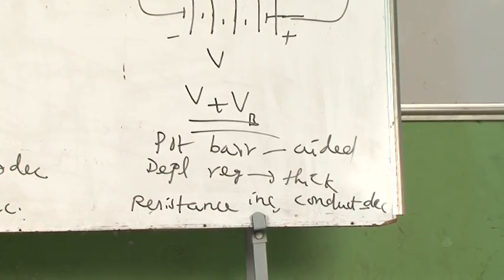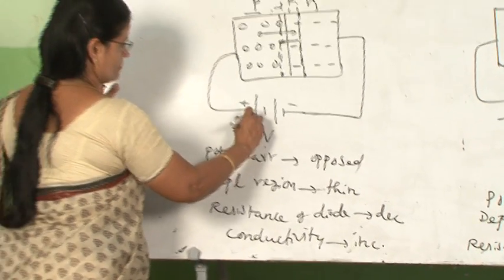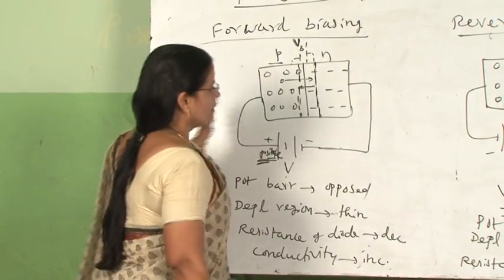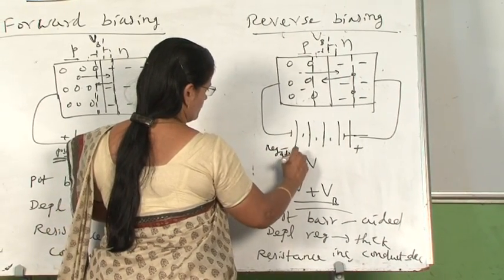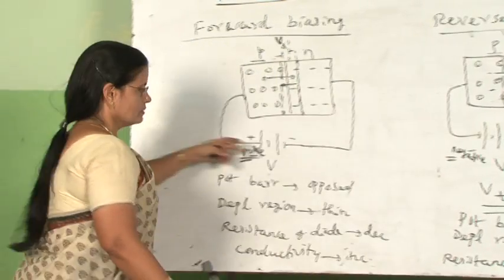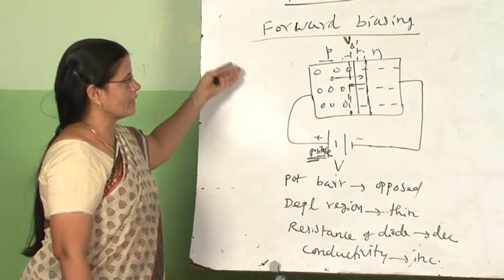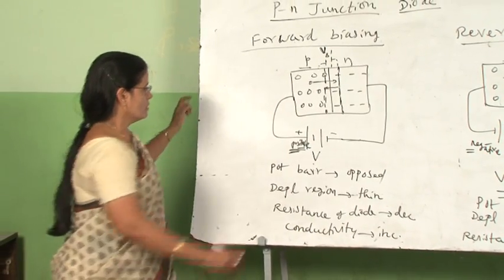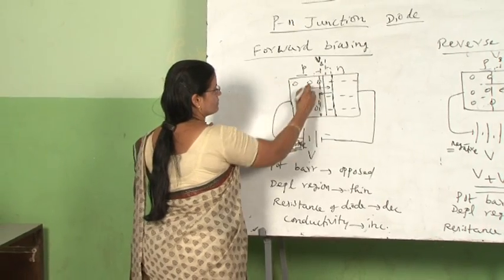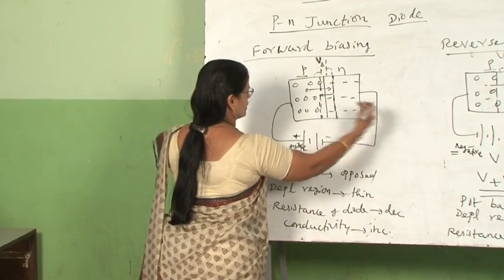To summarize biasing: in forward biasing, connect the P-type to the positive terminal — potential barrier is opposed, depletion region becomes thin, resistance decreases, and conductivity increases. In reverse biasing, connect the P-type to the negative terminal — the opposite occurs. We can draw the characteristic curves of forward and reverse biasing of the P-N junction diode. In forward biasing, the majority charge carriers are repelled and try to cross the junction.